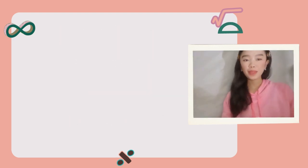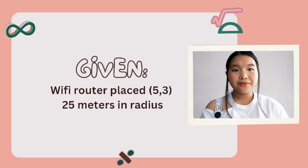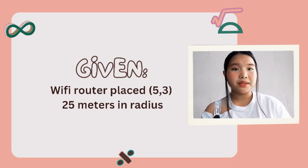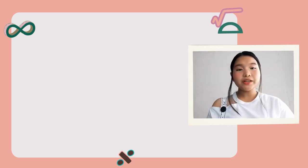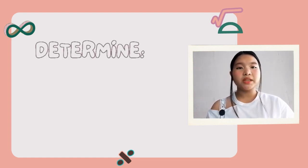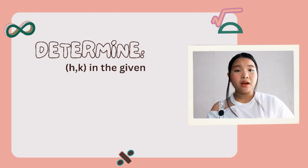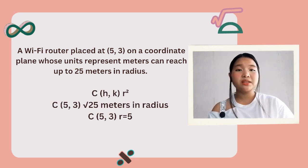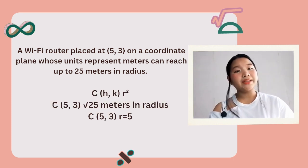So, what are the given values in the problem? The given is (5, 3), which is the place where the Wi-Fi router is, and 25 meters as the radius. To find the standard form equation of the circle, we first determine h and k. Given that (5, 3) is our center, h is 5 and k is 3.